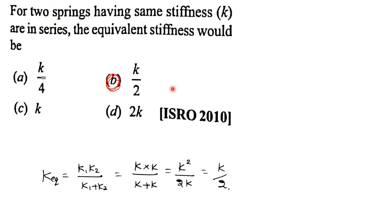ISRO 2010 question: for two springs each having stiffness k connected in series, the equivalent stiffness would be? Using the series formula: k_equivalent = (k × k) / (k + k) = k² / 2k = k/2. Answer: option B, k/2.